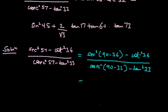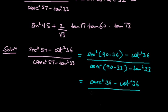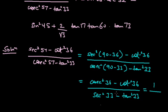We can convert sec²54 as sec²(90 - 36), and since sec(90 - θ) = cosec θ, this becomes cosec²36 - cot²36. Similarly in the denominator, cosec²57 = cosec²(90 - 33), and cosec(90 - θ) = sec θ, giving sec²33 - tan²33. Using the identities cosec²θ - cot²θ = 1 and sec²θ - tan²θ = 1, we get 1/1 = 1.